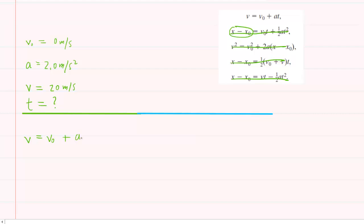And we're going to solve this for the time. So what we'll do is subtract the initial velocity from both sides of the equation. So now we have V minus V naught equals AT. And then to solve for time, we'll divide both sides by the acceleration.